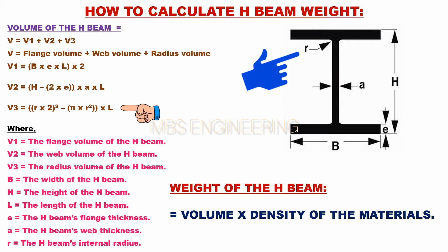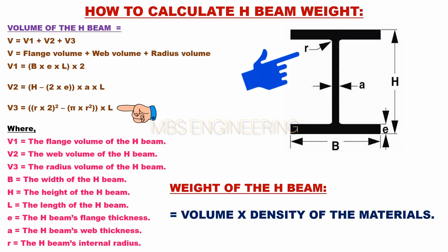V3 is the radius volume of the beam. The formula for V3 equals: (R × 2) whole squared minus pi into R squared, into L.